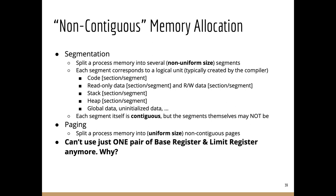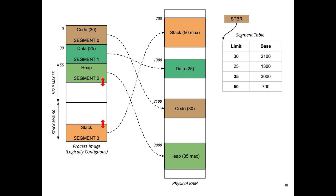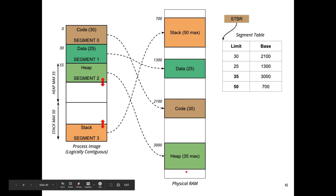The programming model viewed by programmers must also change. Consider a process with a total size of 140: 30 in code, 25 in data, 35 max in heap, and 50 max in stack. These four segments are placed non-contiguously in RAM, but each segment must be placed contiguously. Also, the order of segments in RAM does not have to follow the same order as in the logical space — in logical space you see code, data, heap, then stack.